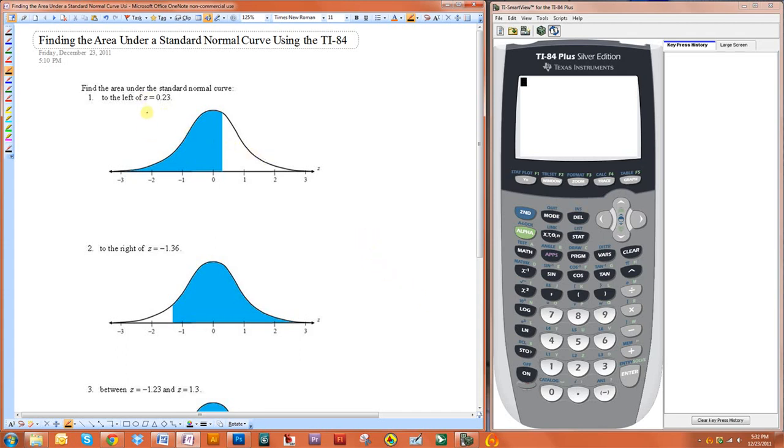With this tutorial, I'm going to show you how to find the area under a standard normal curve given a z value for a boundary and using the TI-84.